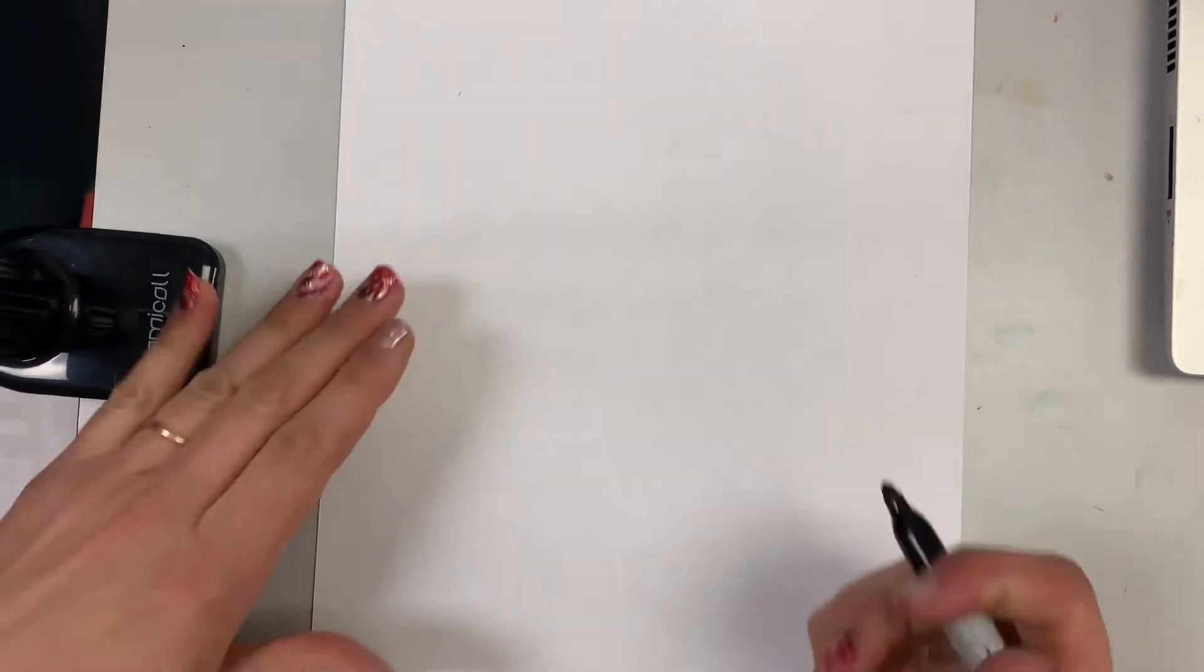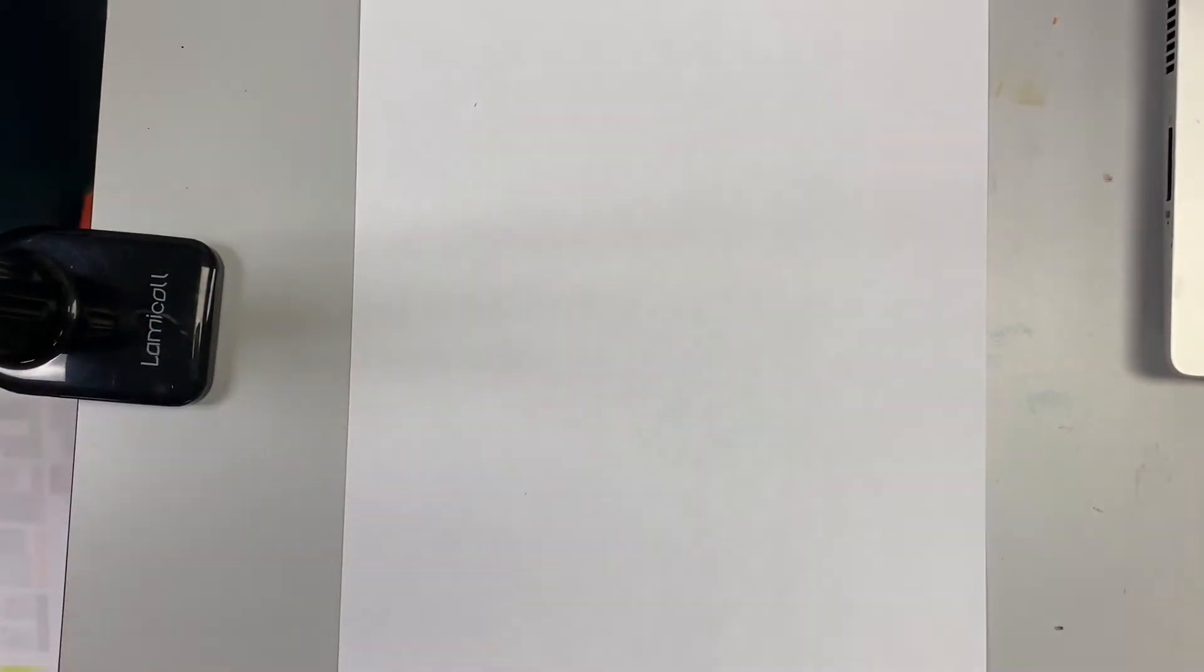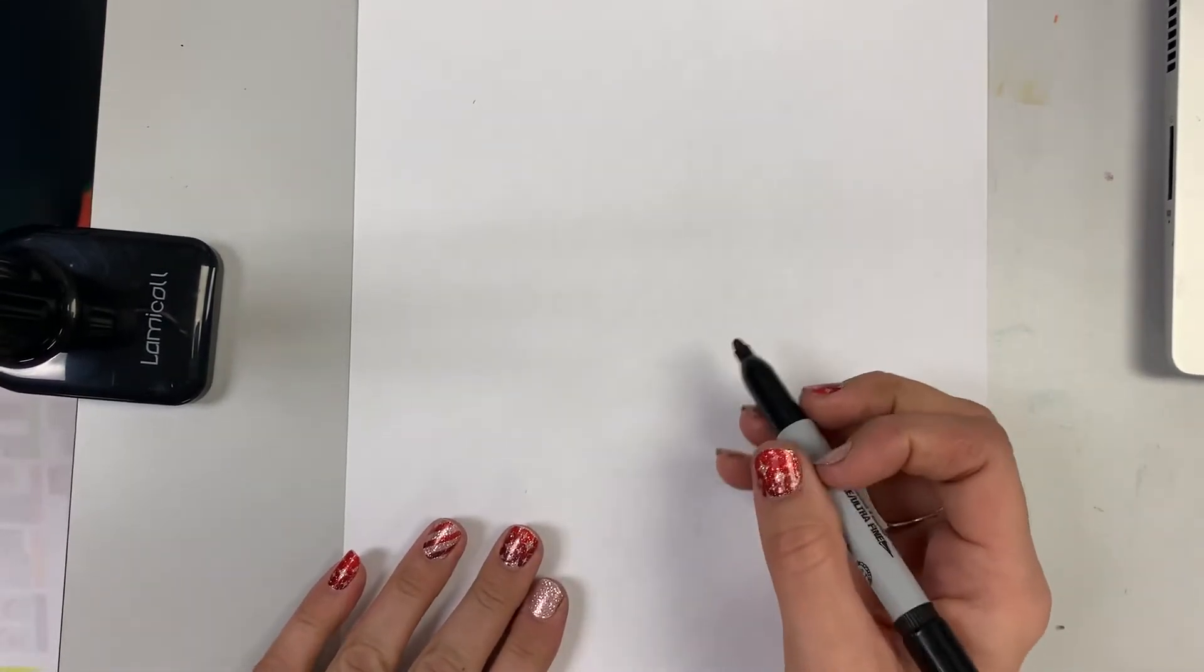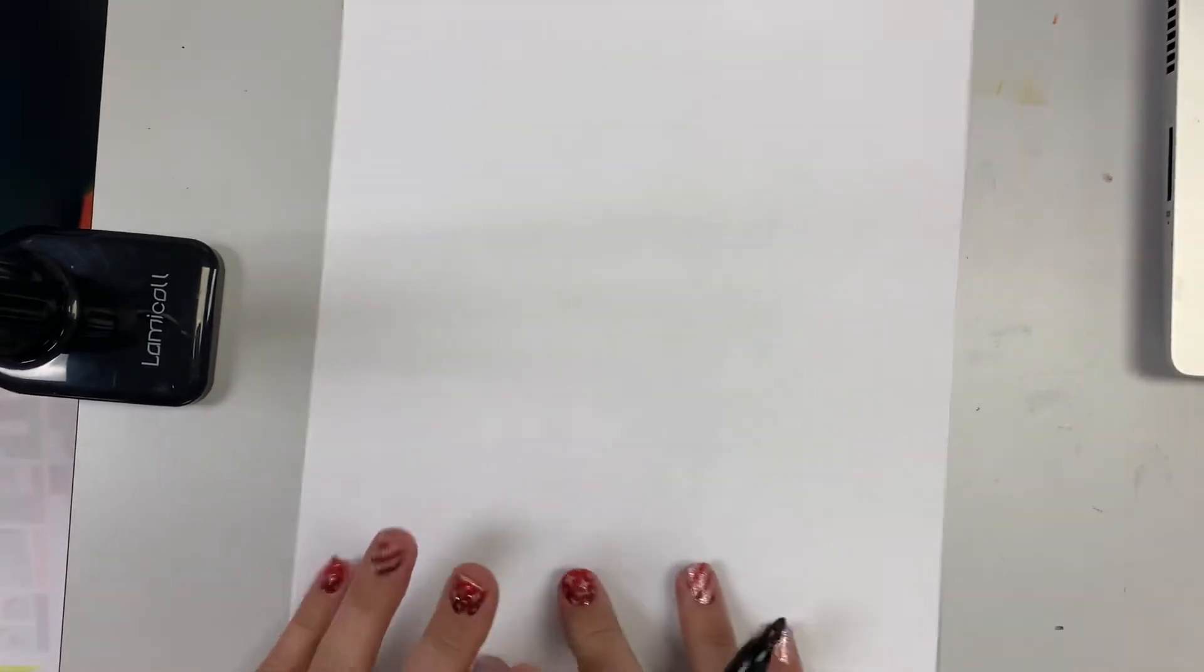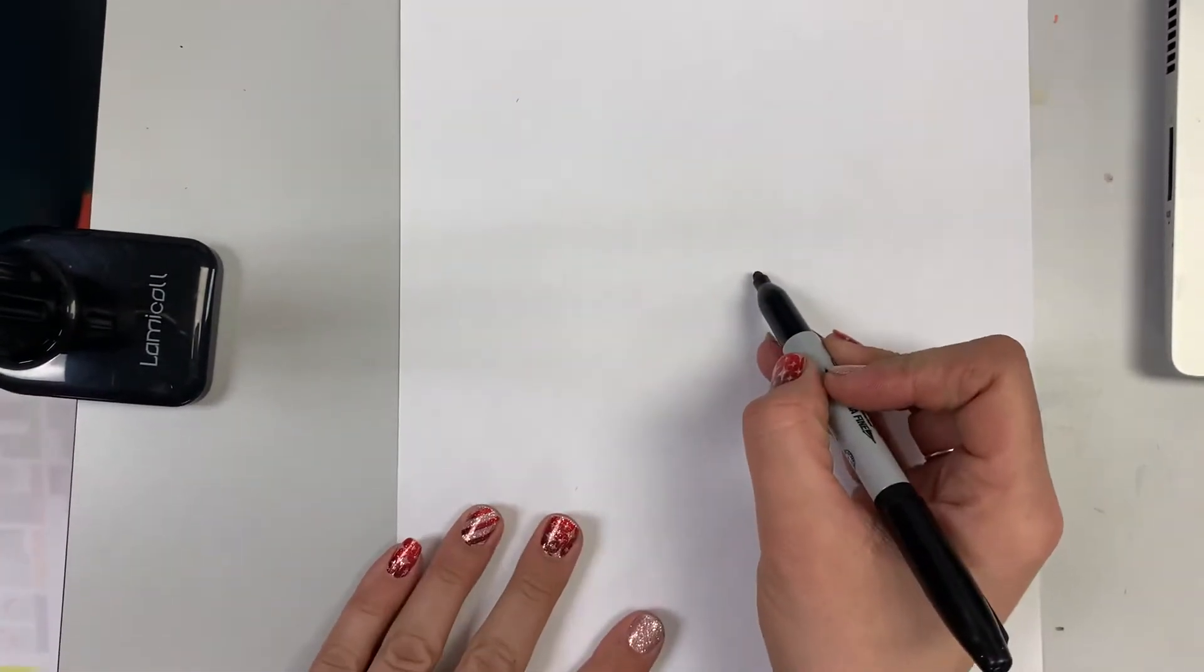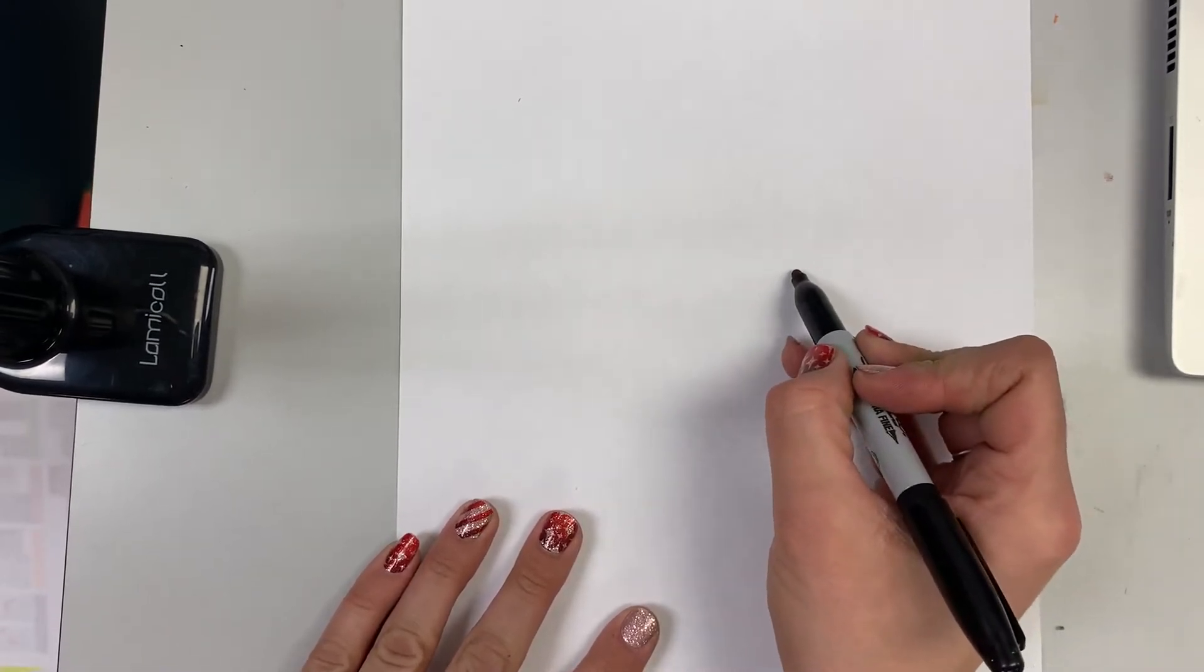Welcome back second graders. Today we are going to work with pattern a little bit. So what we're going to do is create a mug and then around our mug we're going to fill our whole paper with different patterns.